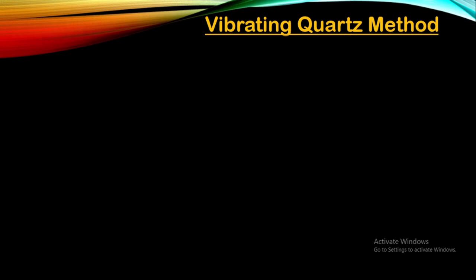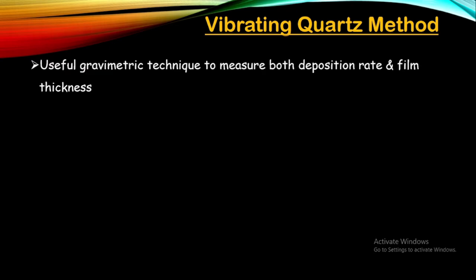This vibrating quartz method is a very useful gravimetric technique to measure both deposition rate as well as film thickness, and it involves a quartz crystal oscillator. Gravimetric means relating to the measurement of weight. The quartz crystal microbalance used in this method is an extremely sensitive mass balance which can measure nanogram to microgram level changes in mass per unit area — so even a minute change in mass is going to be recorded.